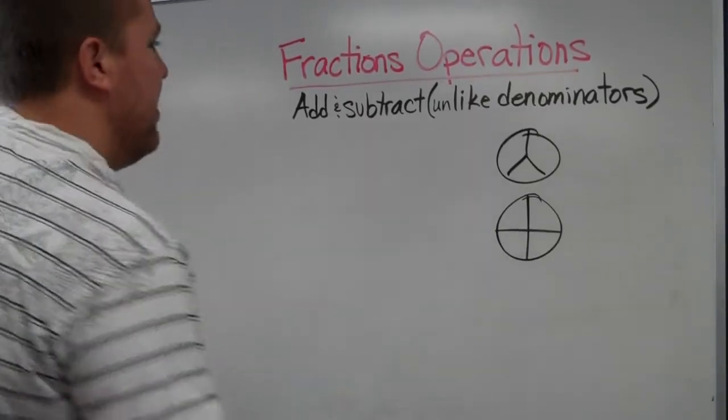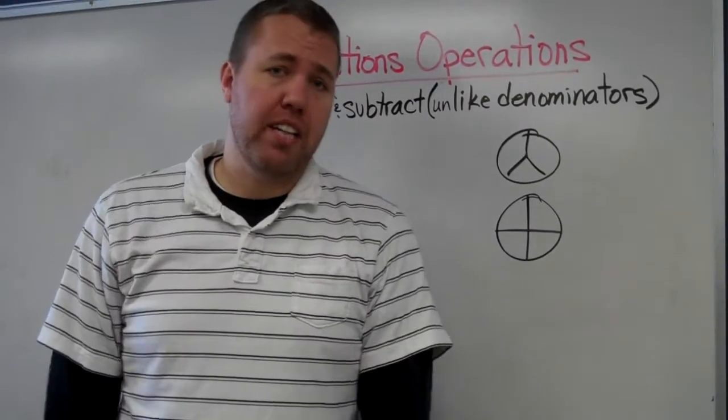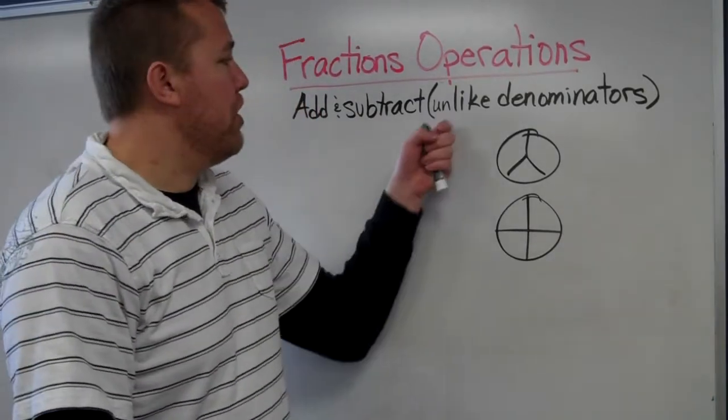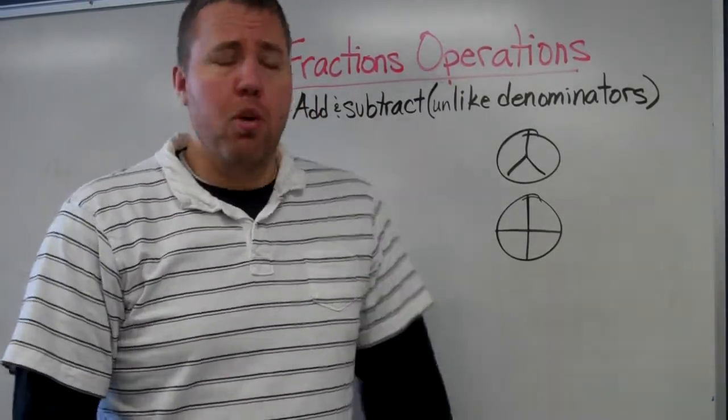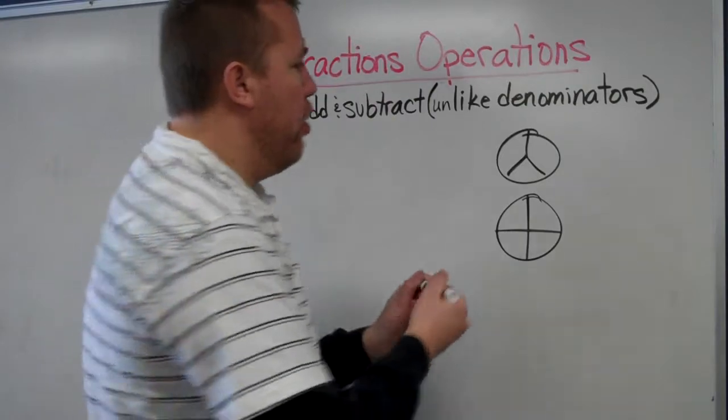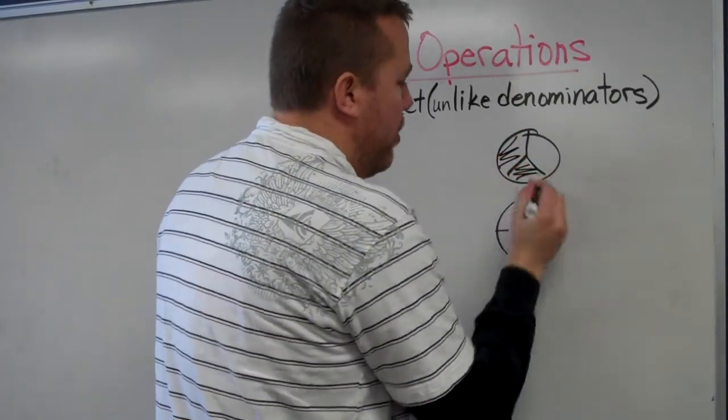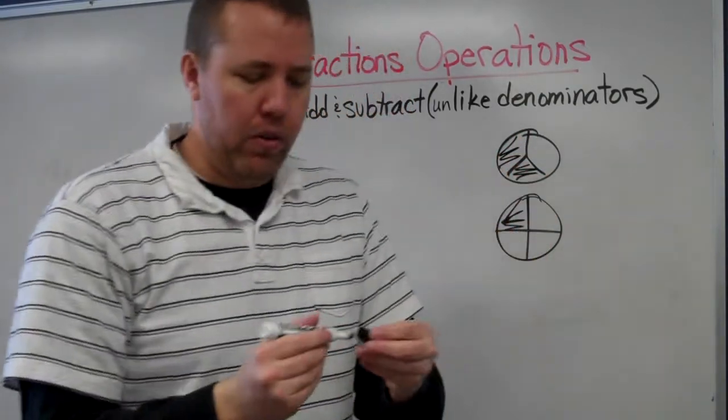Once we understand the basic concept of adding and subtracting fractions, then we move on to unlike denominators. What happens when we want to add, let's say, two-thirds and one-fourth?